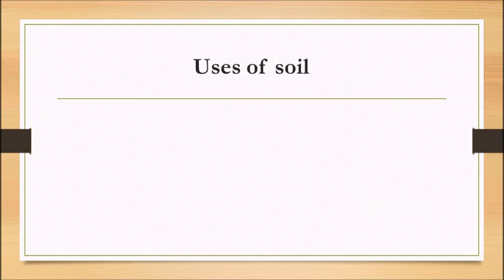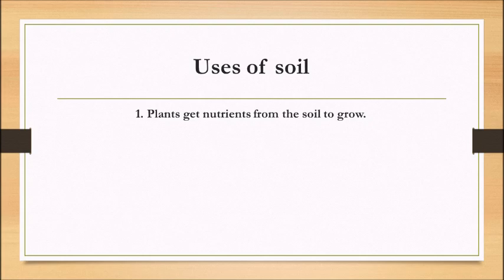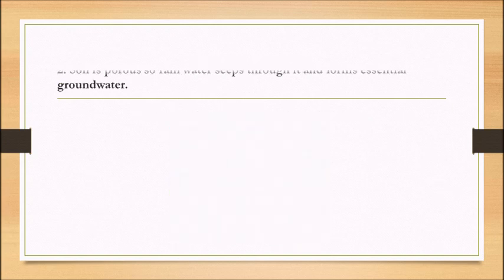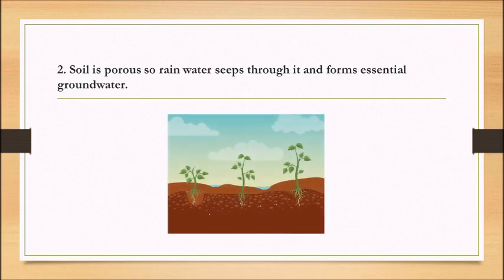Uses of Soil: Plants get nutrients from the soil to grow. Soil is porous, so rainwater seeps through it and forms essential groundwater.